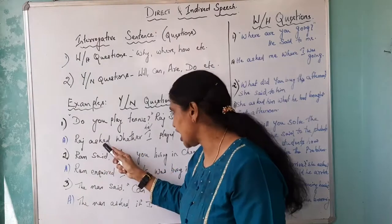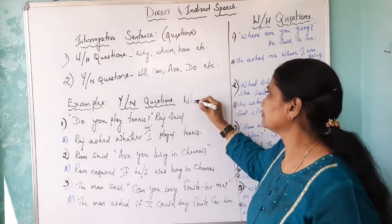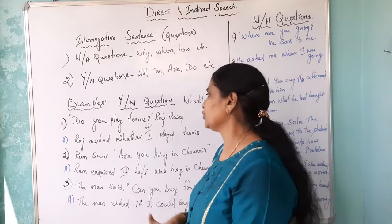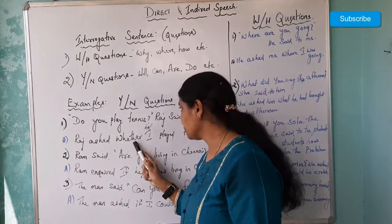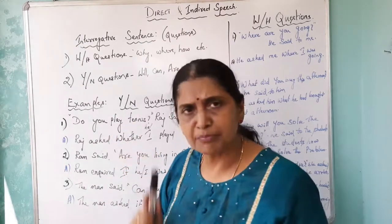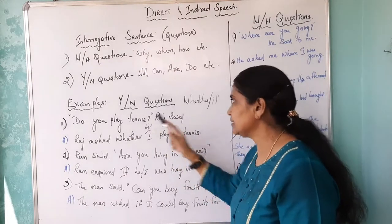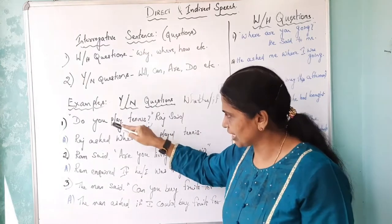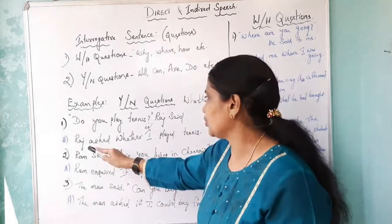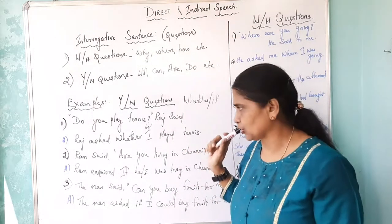Your reporting verb will be 'Raj asked.' Whenever you get Yes/No questions, you have to use either 'whether' or 'if.' After the verb, you say 'Raj asked whether.' Now, 'you' could be 'he,' since the object is not mentioned. So: 'Raj asked whether he played tennis.' We say 'played' because the verb is 'play' in present tense, which must be changed to past tense as per the rules.